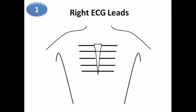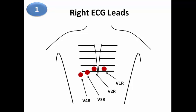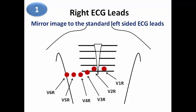For right ECG leads, the classical way is a mirror image to the standard left-sided precordial leads. V1 is placed at the left 4th intercostal space to the left of the sternum, V2 on the right side of the sternum also in the 4th space, V3 midway between V2 and V4, and V4 in the right 5th intercostal space at the mid-clavicular line. Then V5 at the anterior axillary line on the right side and V6 at the mid-axillary line — a complete mirror image of the standard leads.